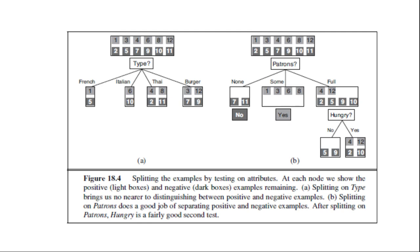We say patron is a fairly important attribute because if the value is none or same, then we are left with example sets for which we can answer definitely no and yes respectively. If the value is full, we are left with a mixed set of examples. In general, after the first attribute test splits the examples, each outcome is a new decision tree learning problem in itself, with fewer examples and one less attribute.